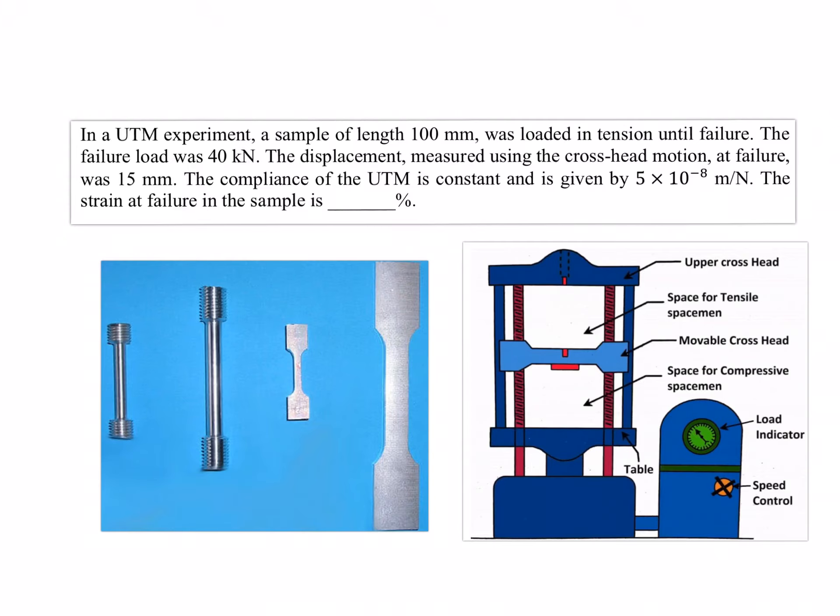But just to consolidate on that aspect, there are three ways which you can measure the displacement: cross head, strain gauge, and extensometer. In this problem we are using the most easiest one, that is the cross head motion, and they are telling the displacement measured using the cross head motion at failure was 15 mm. The compliance of the UTM is constant and is given as a value.